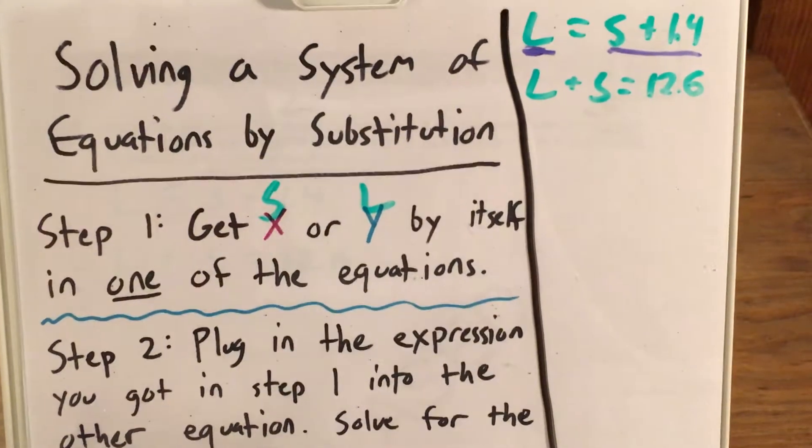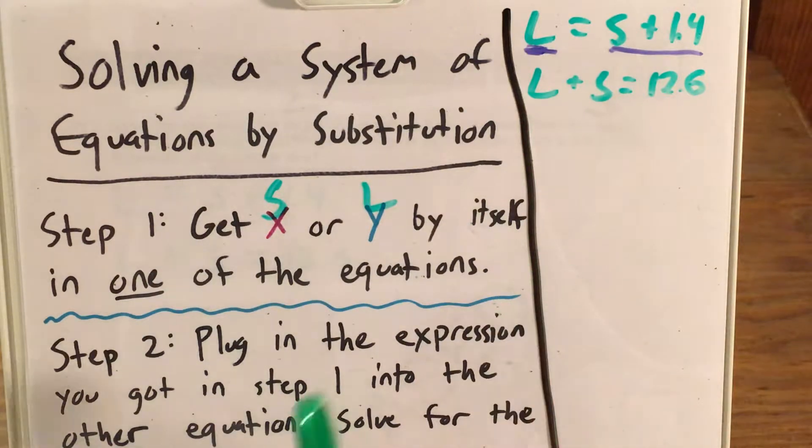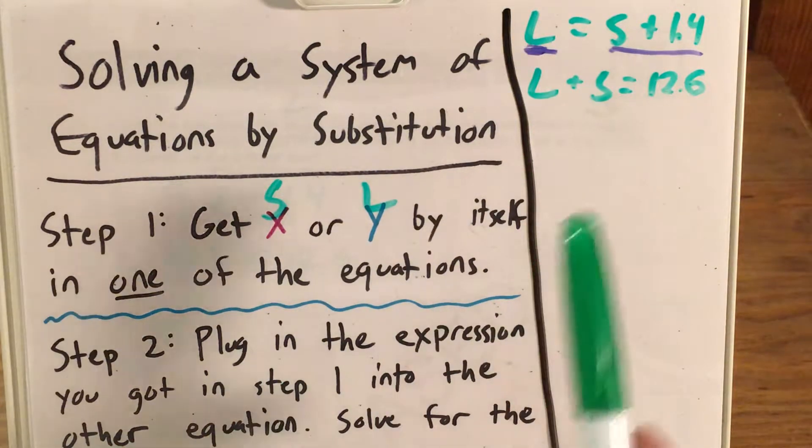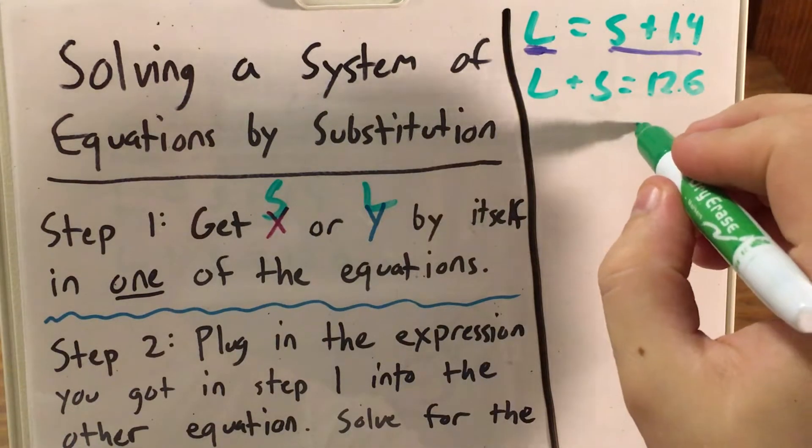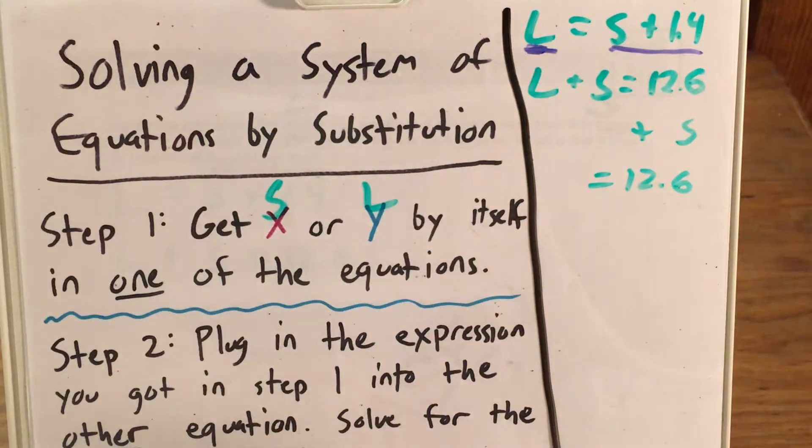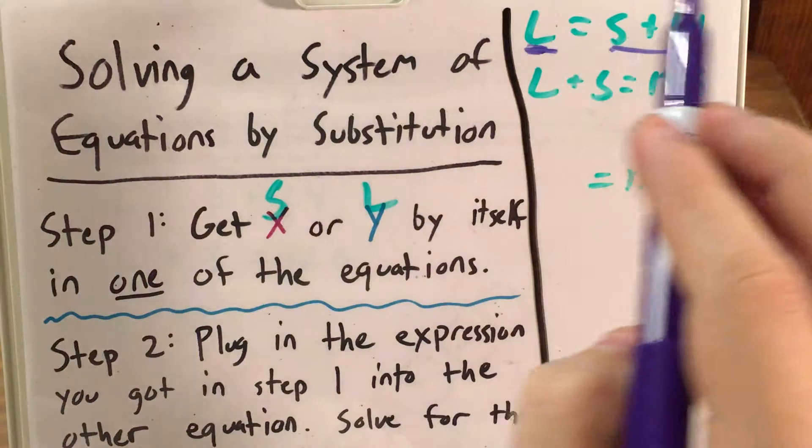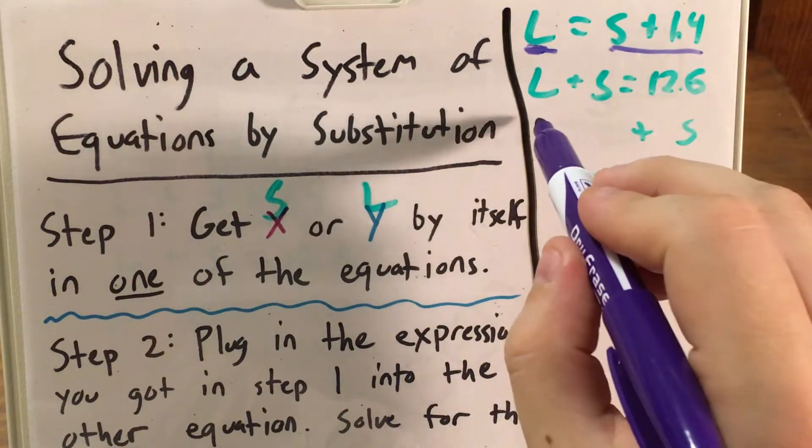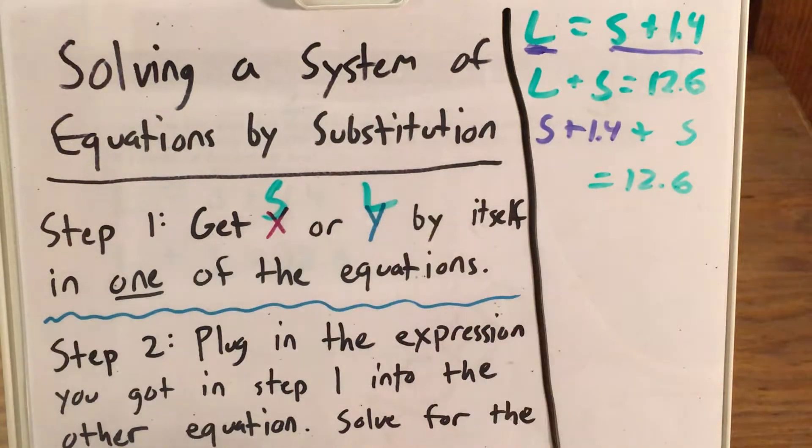Now step two, we need to take this expression that we got in step one for L and that the problem gave us, and plug it into the other equation. So now I'm going to rewrite this one, but instead of L, still equals 12.6, but instead of L, I'm now writing S plus 1.4.